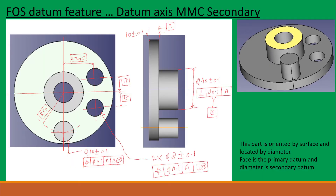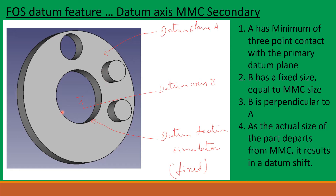FOS Datum Feature Datum Axis MMC Secondary. This part is oriented by this surface and located by this diameter. We select this face as primary datum and this diameter as secondary. These two holes and this feature are specified with a position tolerance of 0.1 each, with primary datum A and secondary datum B at MMC. This surface A has minimum 3-point contact with the primary datum plane, and B has a fixed size equal to MMC size and is perpendicular to datum A. As the actual size of the part departs from MMC, it results in datum shift.